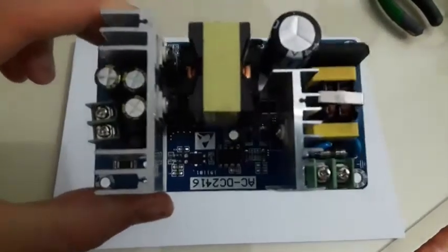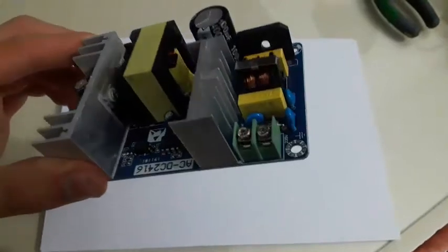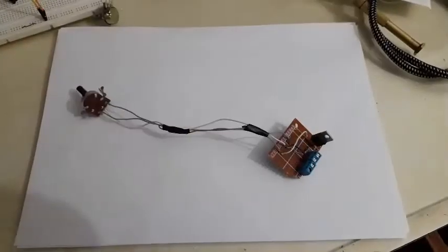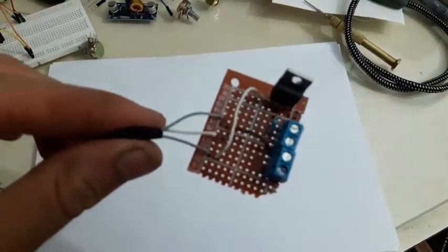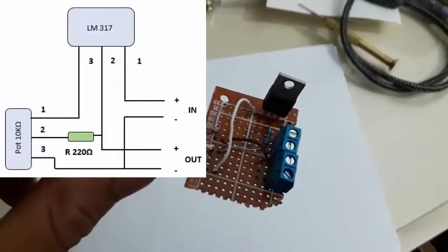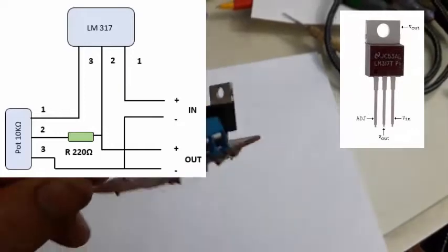This module transforms the main voltage 220 volts into a DC voltage of 36 volts 5 amps. This tiny circuit that I made is a voltage regulator whose schematic is as follows. The LM317 regulator allows to vary the DC voltage coming out of the first module.